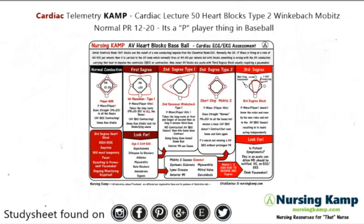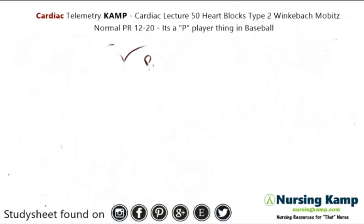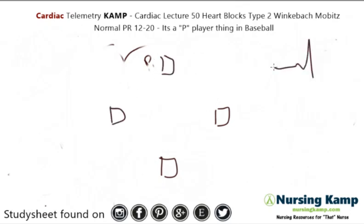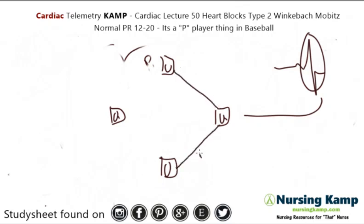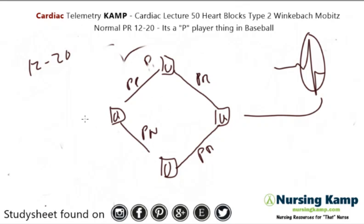In baseball there are four bases, and each base is representative of a QRS complex — so there's a QRS for every base. The journey to each base is the PR interval. A normal player has a normal PR interval, which is 12 to 20. That is normal conduction — there's a QRS after every P wave.